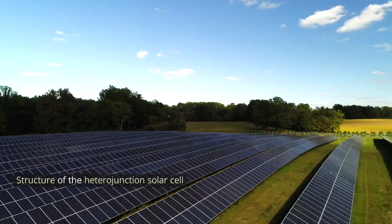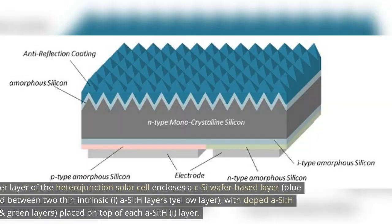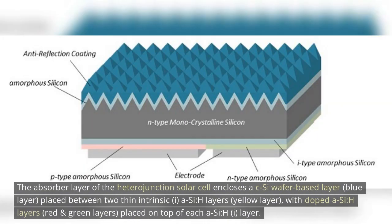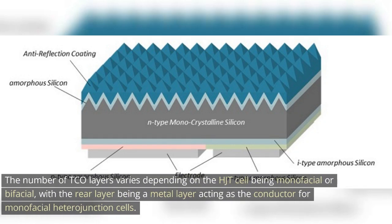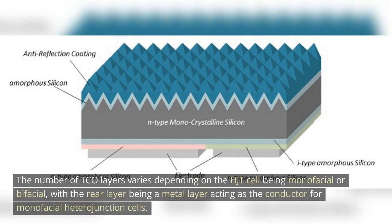Structure of the heterojunction solar cell. The absorber layer of the heterojunction solar cell encloses a c-Si wafer-based layer, blue layer, placed between two thin intrinsic i a-Si:H layers, yellow layer, with doped a-Si:H layers, red and green layers, placed on top of each a-Si:H i layer. The number of TCO layers varies depending on the HJT cell being monofacial or bifacial, with the rear layer being a metal layer acting as the conductor for monofacial heterojunction cells.